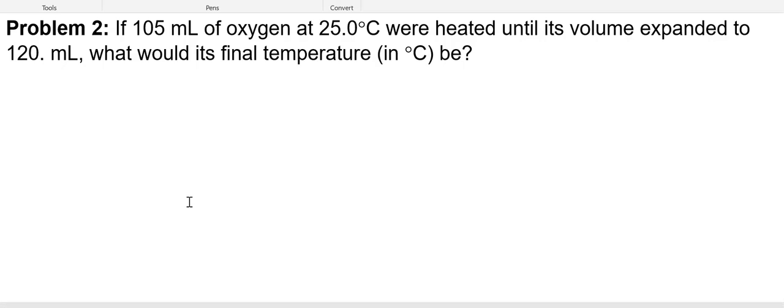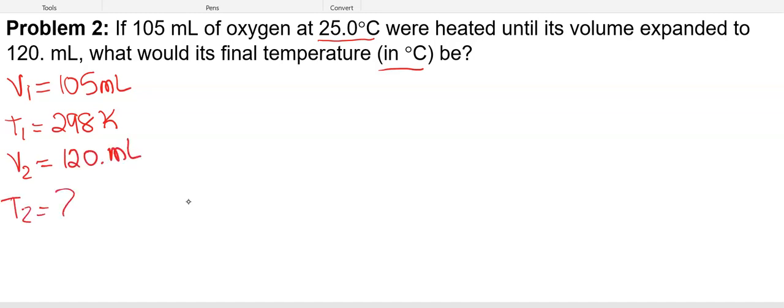So for this one, we're reading, we have 105 milliliters of oxygen at 25 degrees C. Remembering we always have to convert from C to Kelvin. We're heated until its volume expanded to 120 mils. What would its final temperature in degrees C be? So this is tricky because it's going to have you convert back at the end. So identifying variables, V1 is 105. T1 is 25 degrees C plus 273 is 298 Kelvin. Expands to V2, which is equal to 120 mils. And our T2 is our question mark.